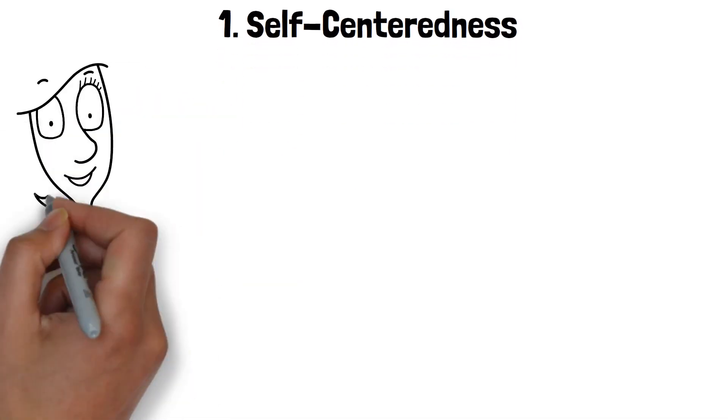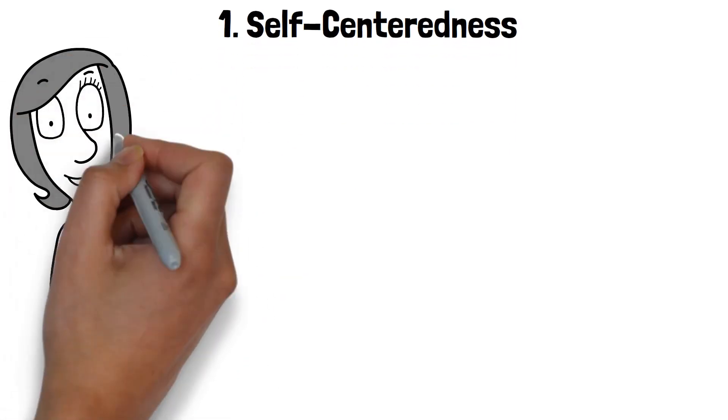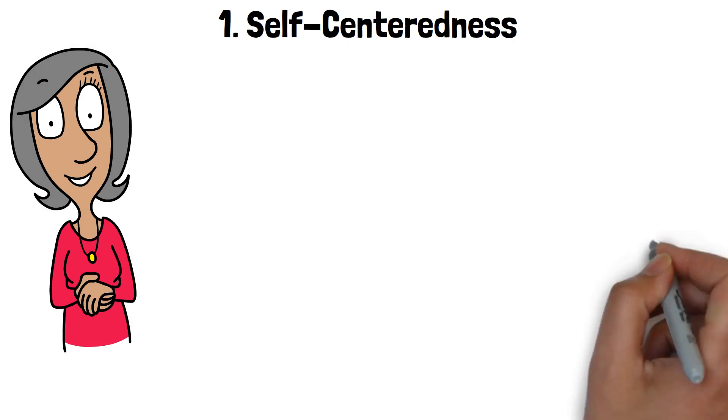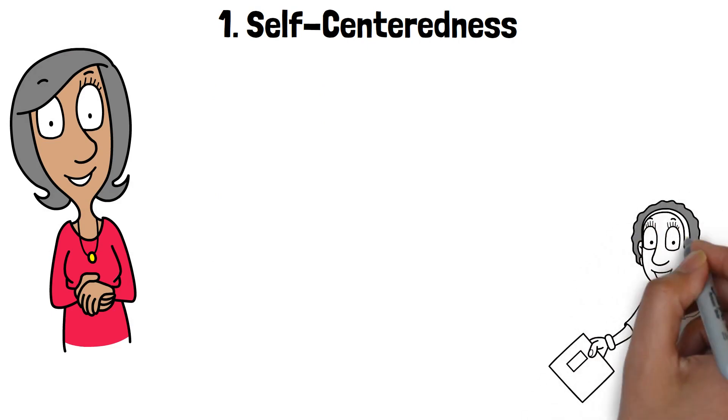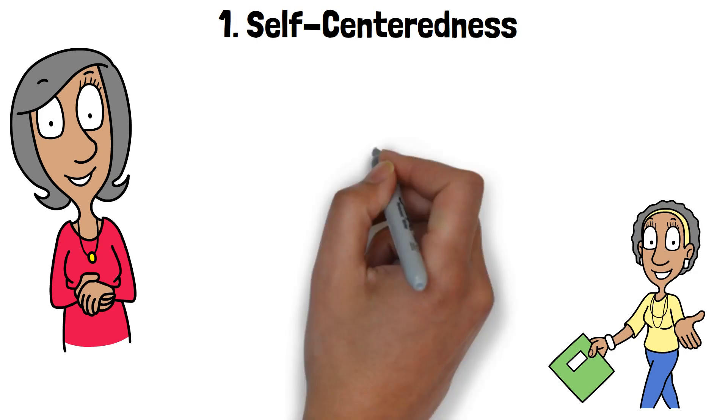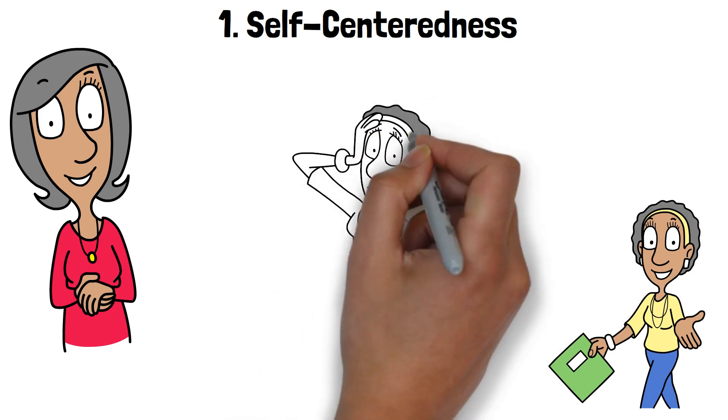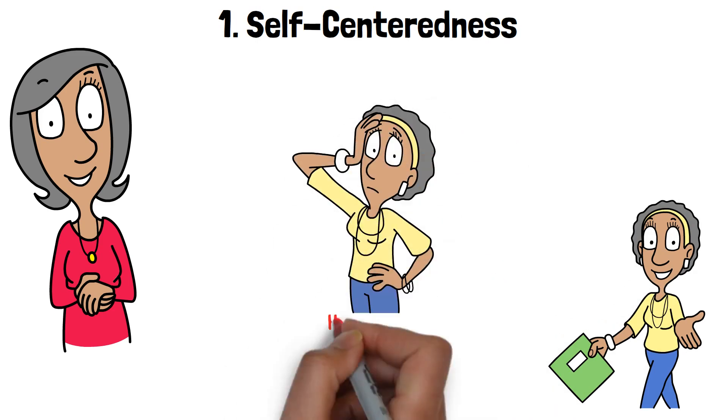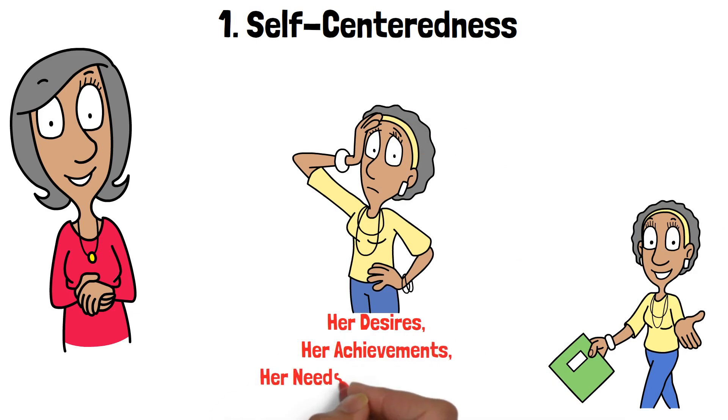1. Self-centeredness. Have you ever felt like you're orbiting in the universe of your narcissistic wife? It's not your imagination. Self-centeredness is a hallmark trait. From conversations to decisions, it's often all about her. Her desires, her achievements, and her needs take center stage.